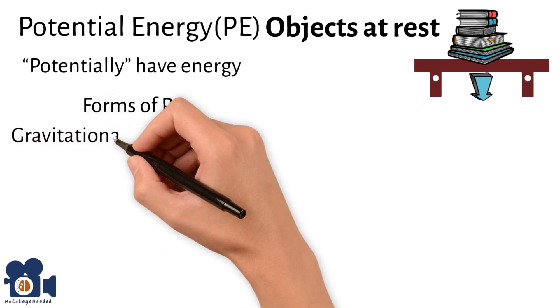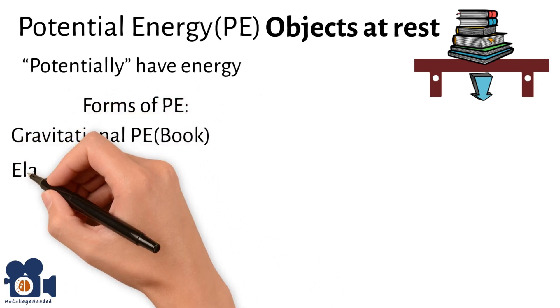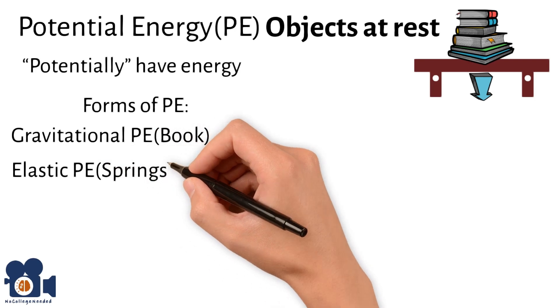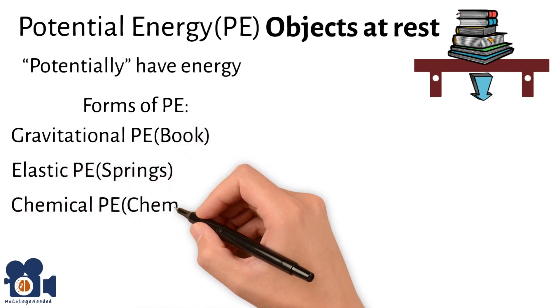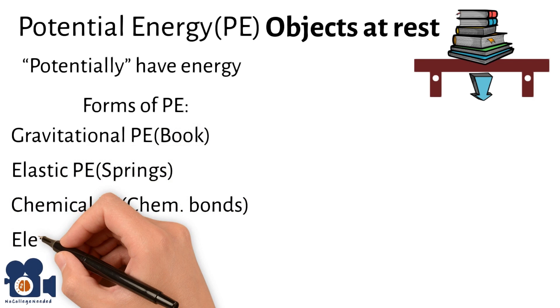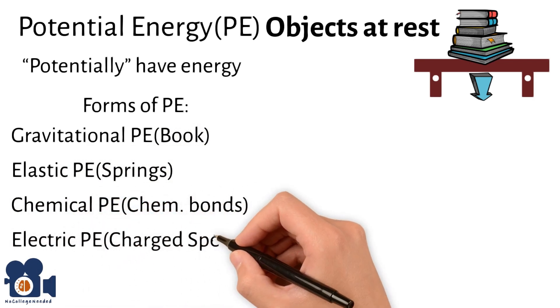There are multiple forms of potential energy, such as gravitational potential energy, the book example; elastic potential energy, energy associated with springs; chemical potential energy, energy in chemical bonds; and electric potential energy, energy from charged particles.